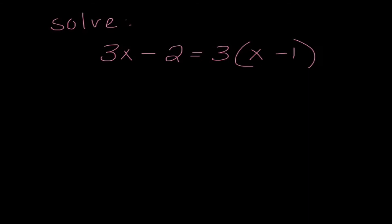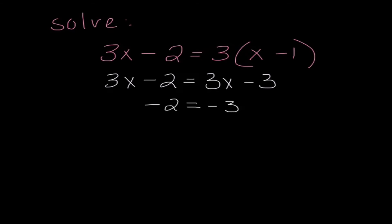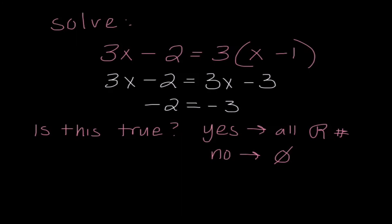One more solving problem — this one is a weird one. First, distribute 3 to get 3x minus 2 equals 3x minus 3. When I subtract 3x from both sides, I'm left with negative 2 equals negative 3. When variables cancel, ask yourself: is this a true statement? If yes, the answer is all real numbers. If no, the answer is no solution. Negative 2 does not equal negative 3, so my answer is no solution.